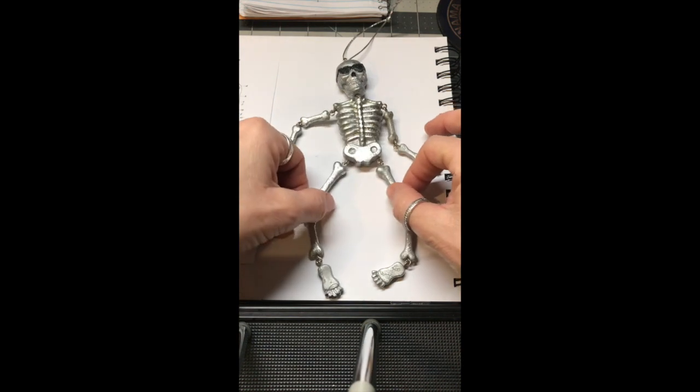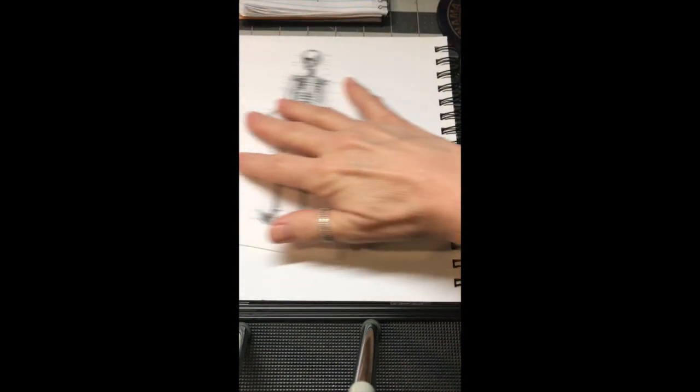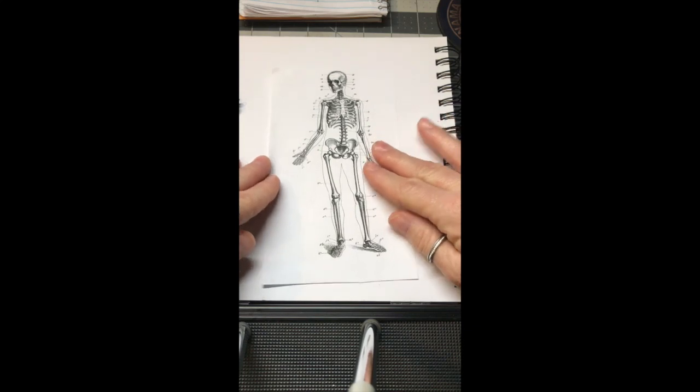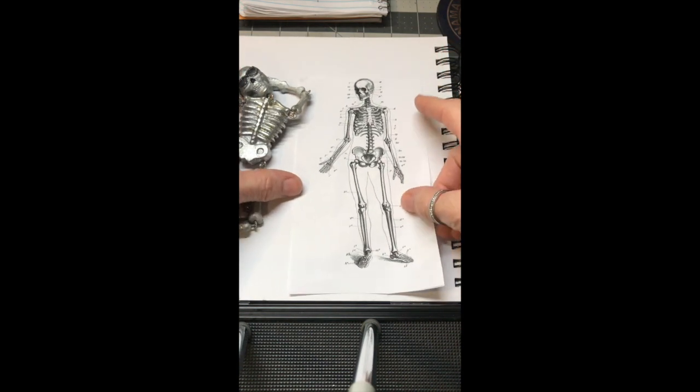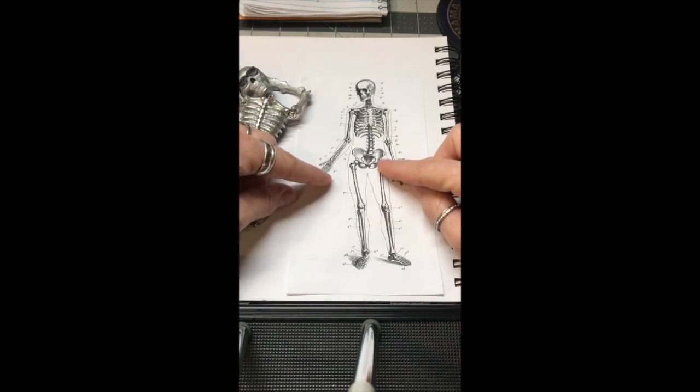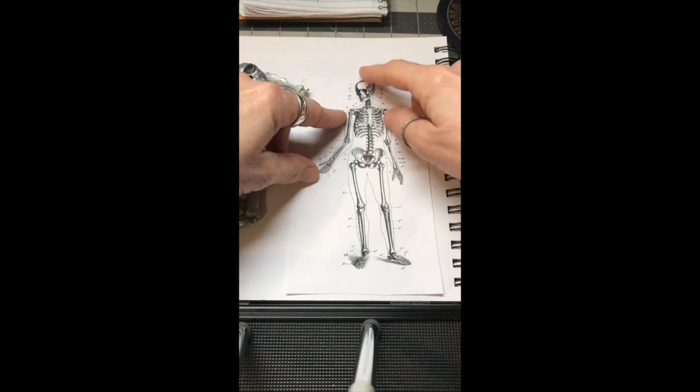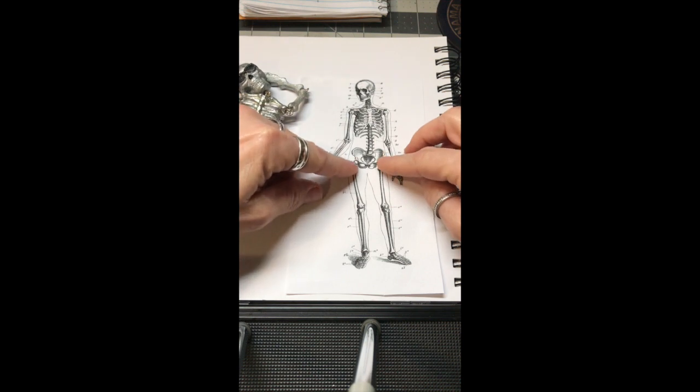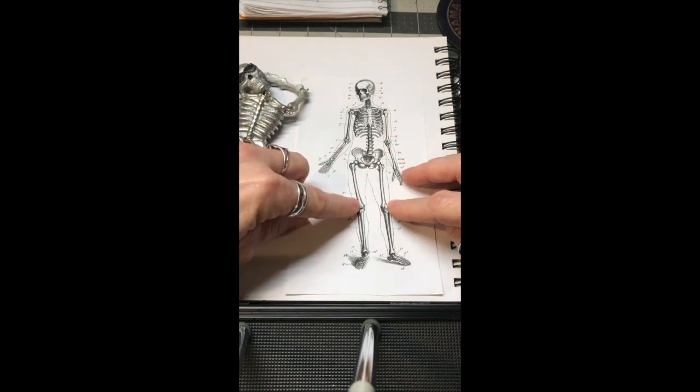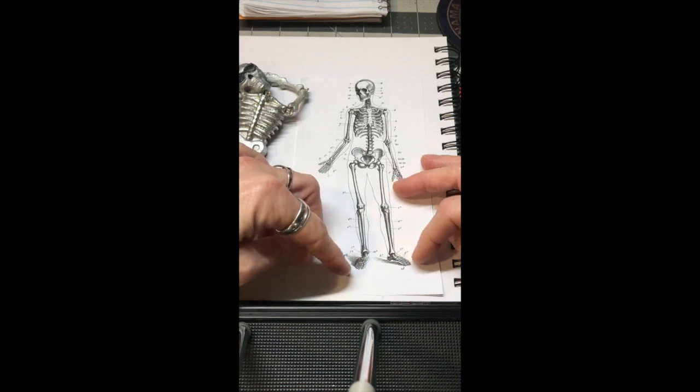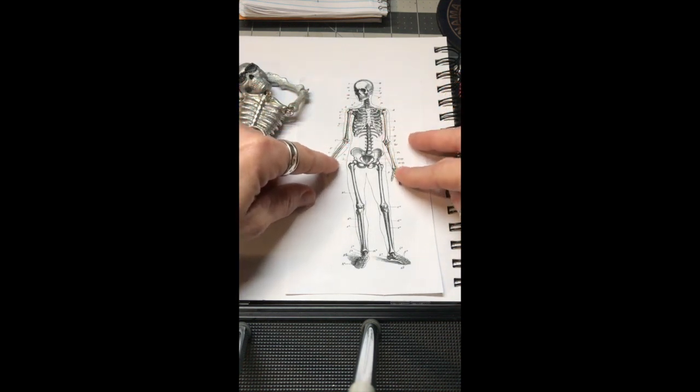But today we are going to try our best to draw a more realistic skeleton right here. Let's compare the differences. We want to look at how long he is. Don't forget that he has joints. He has his vertebrae and his skull. We also have hips, called the pelvis, and we have our knees and our ankles and our feet. There are a lot of joints that help us move.